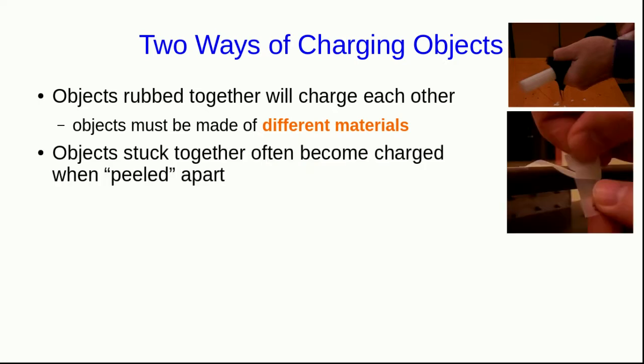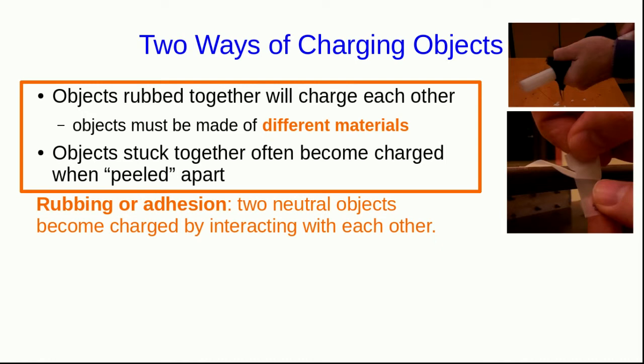Another way we've seen, for example with tape, is that if things are stuck together and they get peeled apart quickly they'll often become charged. In both cases we have two neutral objects at first and they become charged by some surface-to-surface interaction with each other, so we might guess that what's going on here are fairly similar mechanisms.